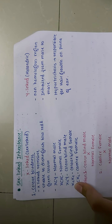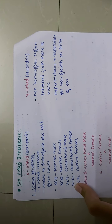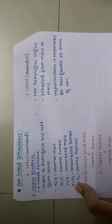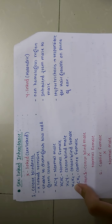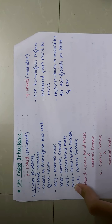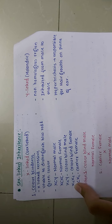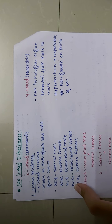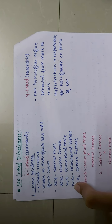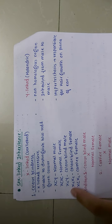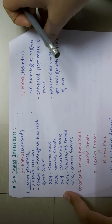Moving further, the next point is sex-linked inheritance. Sex-linked genes are present on the non-homologous region of the sex chromosome, and these traits are determined by the sex-linked gene, hence called sex-linked traits. The inheritance of this sex-linked gene from parent to offspring is known as sex-linked inheritance. There are two types: X-linked genes and Y-linked genes. X-linked genes are also called sex-linked genes, and Y-linked genes are also known as holandric genes.